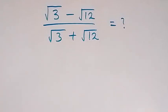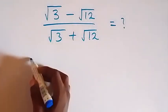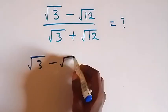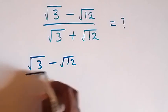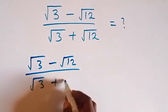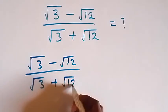Hello, you are welcome. How to solve this nice square root math problem. Let's use the first method. We have √3 minus √12 over √3 plus √12.